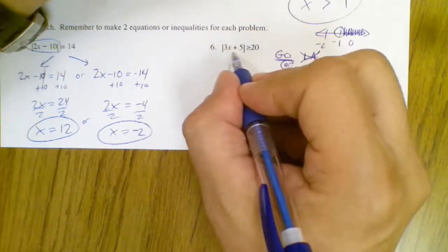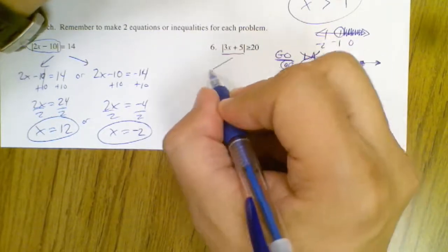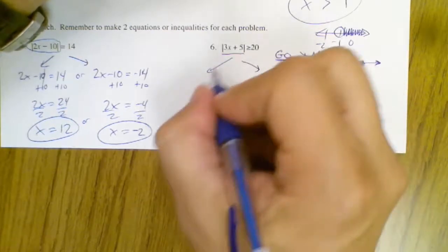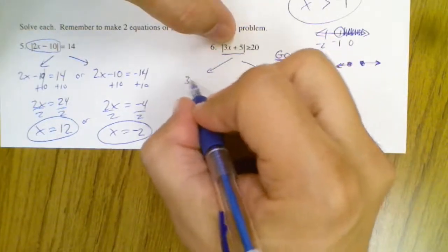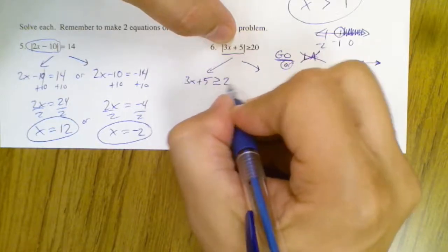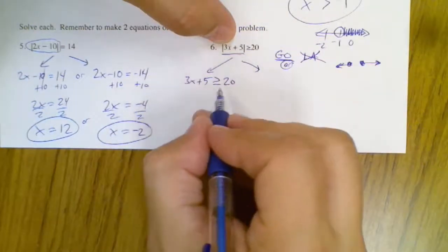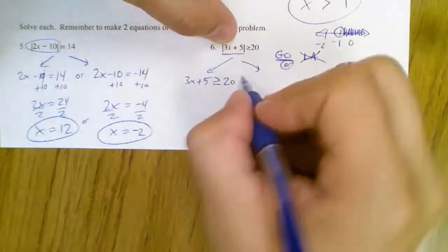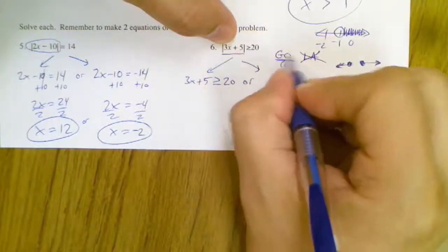So is it isolated? Yeah, there's no like minus 3 or 2 times out in front. So since this guy's by himself, it splits into two separate equations. And once again, I don't ever mess with what's inside the absolute value signs. So either 3x plus 5 is greater than or equal to 20, or